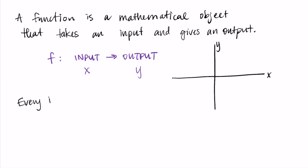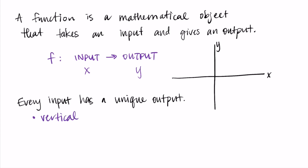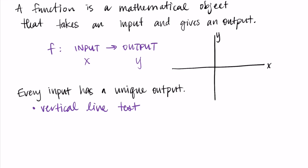Functions have a property that every input has a unique output. My favorite analogy for this is a vending machine. When you input the number of the item that you want, you expect that the vending machine will give you that item — every input should have only one output. A well-working vending machine is like a function. You might also remember the vertical line test as a way to check if something is a function.